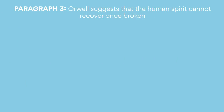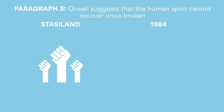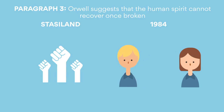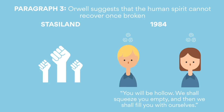Paragraph three: Orwell suggests that the human spirit cannot recover once broken. In 1984, the overall message is a pessimistic one. Though characters like Frau Paul in Stasieland are able to find some strength, Orwell portrays an omnipotent regime that is capable of totally crushing its victims. As soon as they're caught, Winston and Julia are separated, interrogated, and brainwashed into confessing. One of the most chilling lines within the novel is: 'You will be hollow, we shall squeeze you empty, and then we shall fill you with ourselves.' And the regime is successful — it instills loyalty and love for Big Brother in both people, indicating that their rebellious spirit and human will has truly been vanquished.